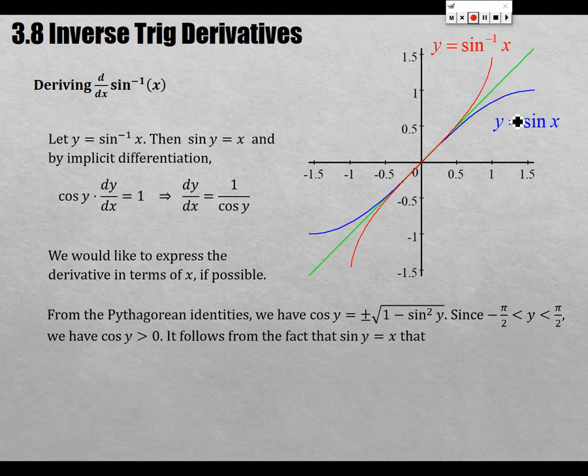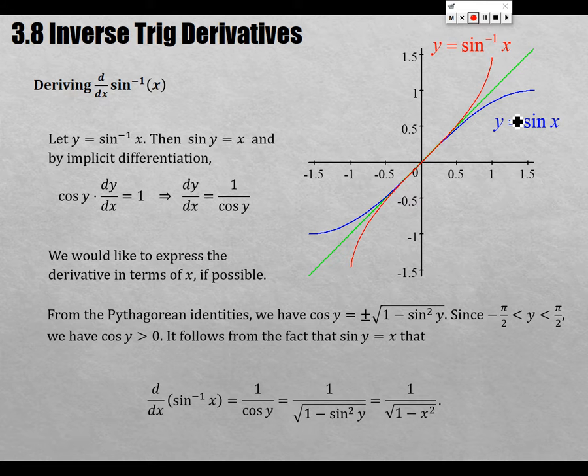Cosine y from the Pythagorean identity is this. Remember this? Cosine squared is equal to 1 minus sine squared. So, 1 minus sine squared of y. What is sine squared of y? Well, what's sine y? x. So it turns out that cosine y is the square root of 1 minus x squared.